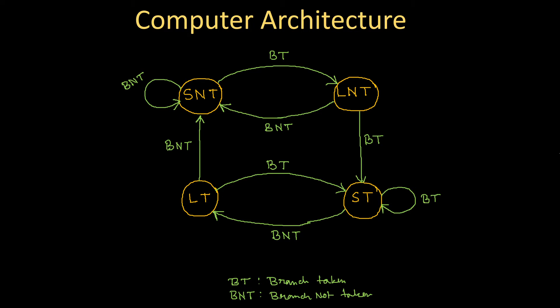We have discussed a four-state diagram approach for dynamical prediction of whether a conditional branch will be taken or not. We have seen that this four-state diagram is more efficient than the two-state diagram for very complex programs. Now we will start discussing a totally different era of computer pipelining.